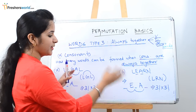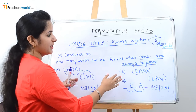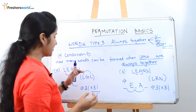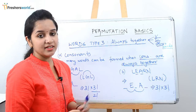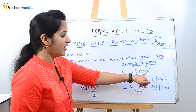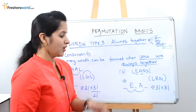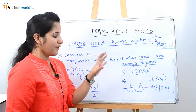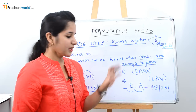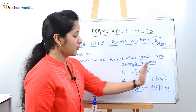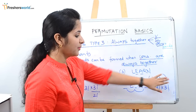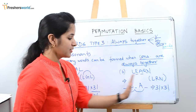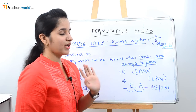A similar type of problem can come for other words. What do we mean by other words? They will give you a question like: take LEARN, and in the question R and N should always be together, or L and E should always be together. Whenever that always together comes, club those letters and put them in a bracket. Write the remaining letters separately and fill the spaces. That's how we do it for always together.